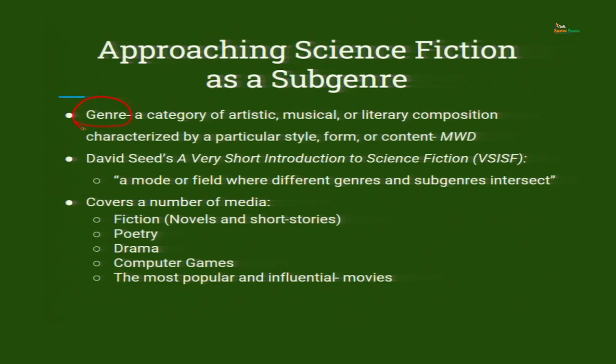Genre — alternatively pronounced as 'genre' — and from Merriam-Webster's Dictionary, the definition is: 'the category of artistic, musical or literary composition characterized by a particular style, form or content.' This entire definition points towards one thing: there is a uniformity, a kind of uniformity that creates a grouping. For example, if you are watching a movie with a lot of thriller and action elements where the hero is fighting the villain, you would call it an action movie.